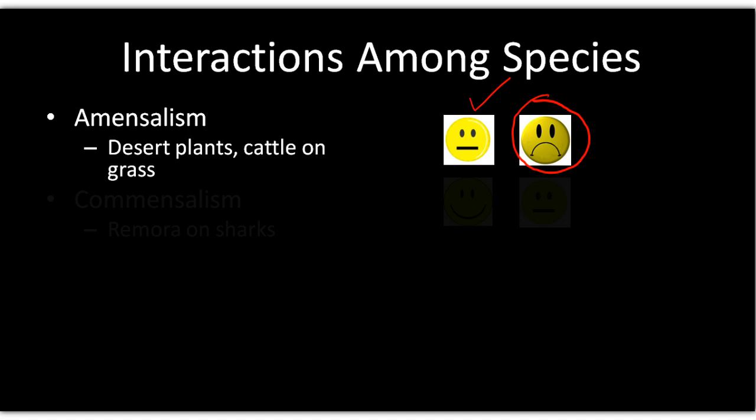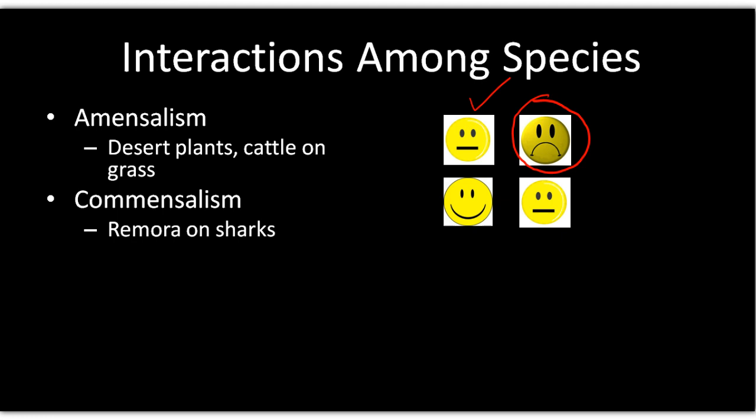Commensalism is more commonly seen — one species benefits while the other is unaffected. Remoras benefit by staying close to sharks and feeding on their scraps, while the shark neither benefits nor is harmed by the relationship.